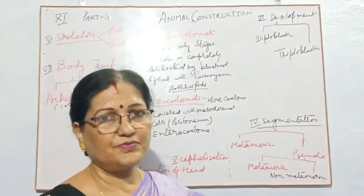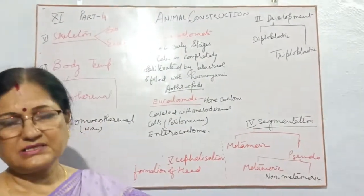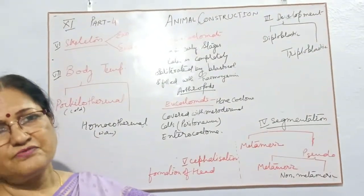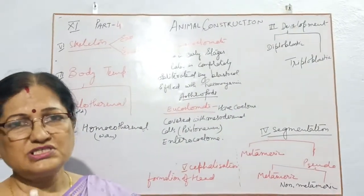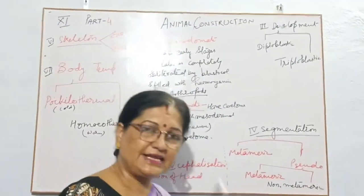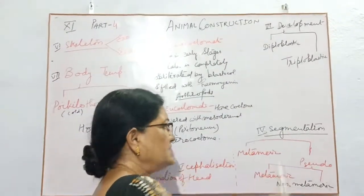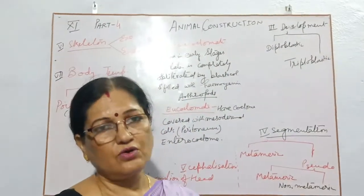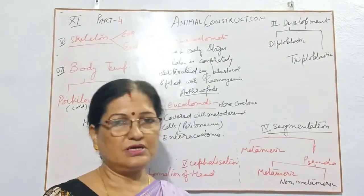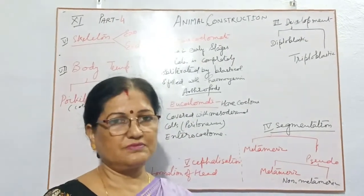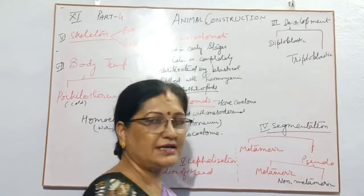I will tell you about two more words — diploblastic and triploblastic. Diploblastic, as the name suggests, means animals will grow with the help of two germ layers, that is ectoderm and endoderm. Triploblastic means animals will grow with three germ layers — ectoderm, endoderm, and mesoderm, as studied earlier. These are the triploblastic animals.